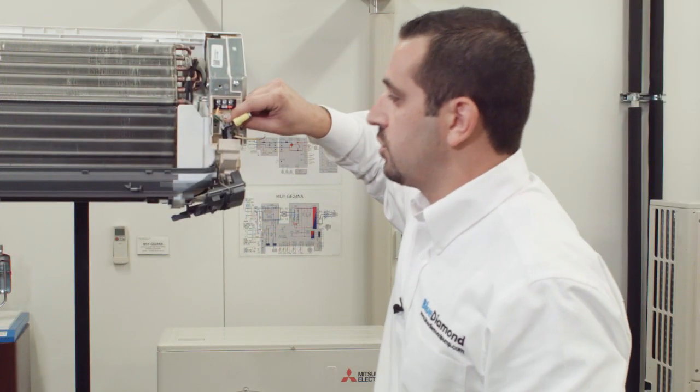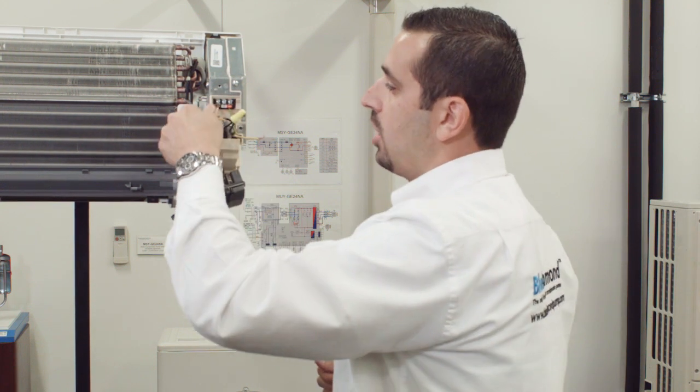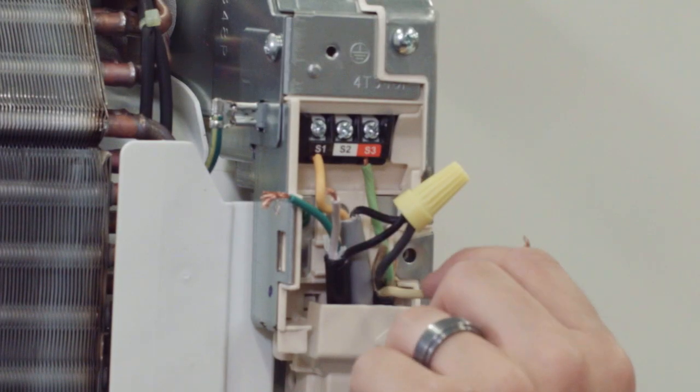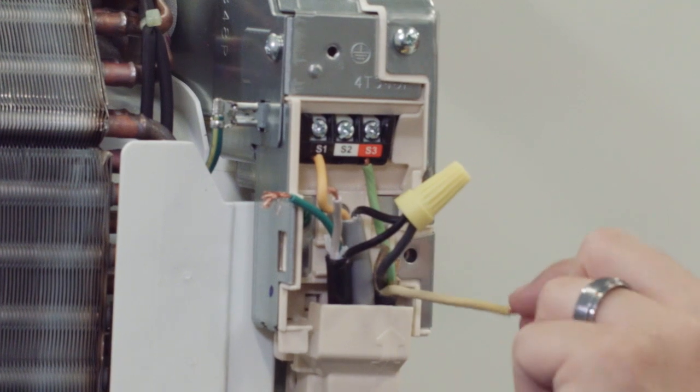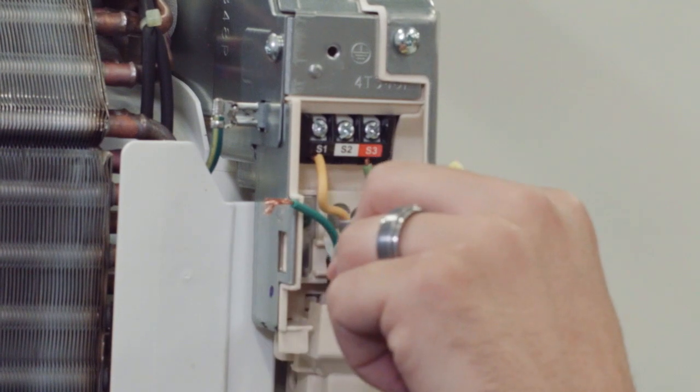Once you've got voltage coming in black and out yellow, the second leg of power is going to come from your S2 terminal. You'll have two wires on your S2 terminal: your S2 from your condenser, which is the yellow wire, and the white wire, which is how we're going to get the other leg of power for our pump.